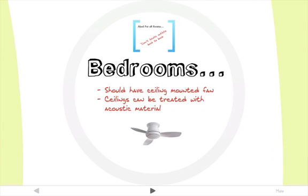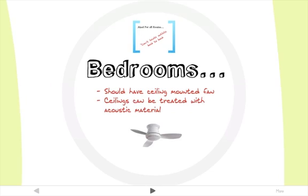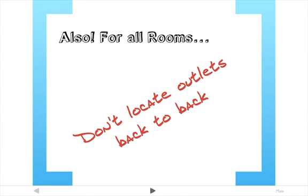Bedroom ceilings should have ceiling-mounted absorptive materials with an NRC of 0.6, and a mechanical ceiling fan system to block noise. Don't locate outlets back-to-back — that would be a great little keyhole for sound to travel through.